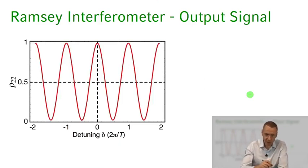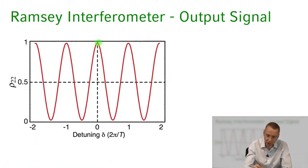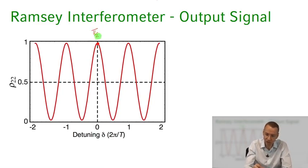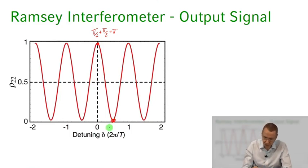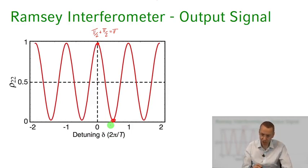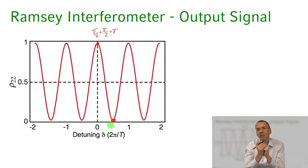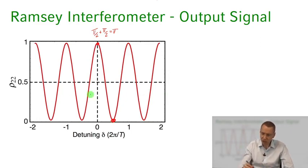This is what the Ramsey interferometer output signal — the Ramsey fringe — looks like: atoms in the excited state as a function of detuning. With zero detuning, all atoms come out in the excited state, because two pi/2 pulses make a pi pulse. With a pi phase shift, all atoms are in the ground state, rho_22 = 0. So as a function of the phase acquired during the free time-of-flight, we change how many atoms exit at each port.